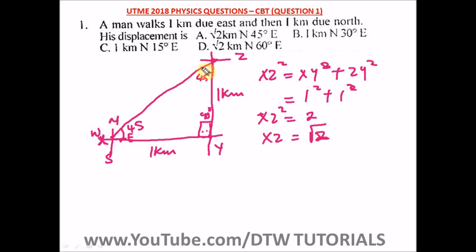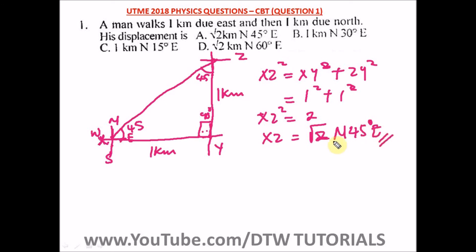So the displacement is √2 kilometers. From the starting point to the endpoint, the displacement is at 45° north east. So the displacement is √2 km at 45° north east from his starting point. This is our correct answer and the right option is option A.